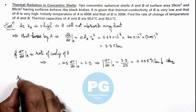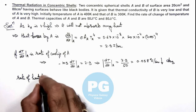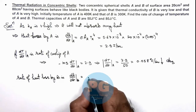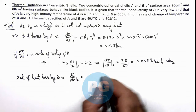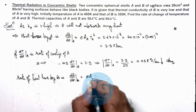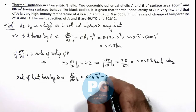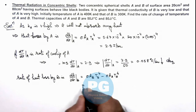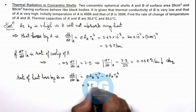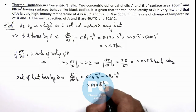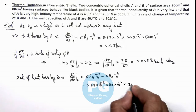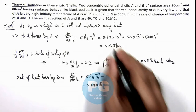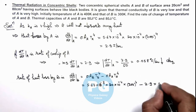Similarly, the rate of heat loss by B: since its thermal conductivity is low, it will also absorb heat. So its net heat loss is sigma × A_B × T_B⁴ minus sigma × A_A × T_A⁴, as it also absorbs heat from A. Substituting values: 5.67 × 10⁻⁸ × 80 × 10⁻⁴ × 300⁴, minus 2.9 (already calculated). Numerically, this gives 0.77 joules per second as the rate of net heat loss from B.